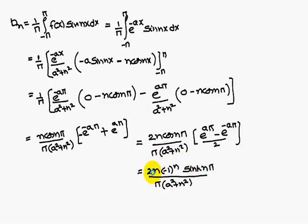Therefore, if you substitute the values a0, an, and bn, you will get the Fourier series. Note here it is a pi, not n pi. Thank you.